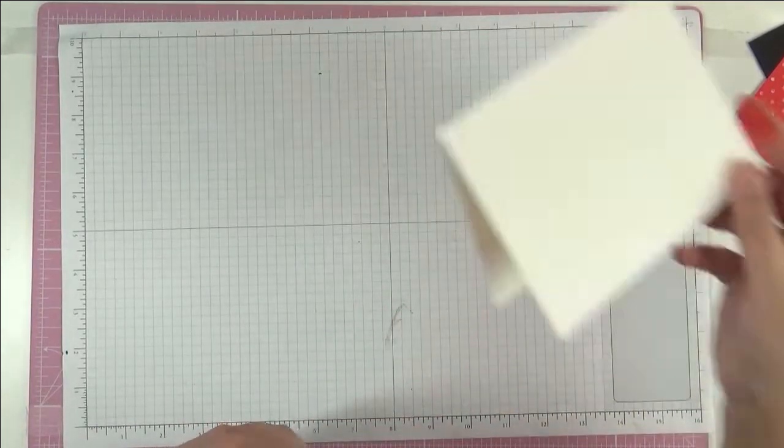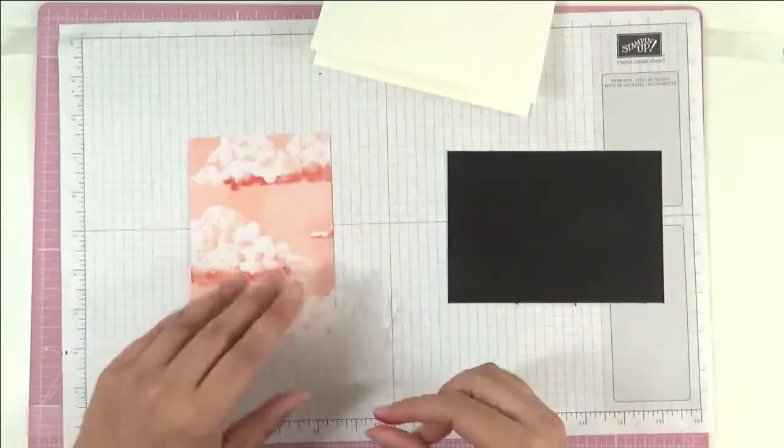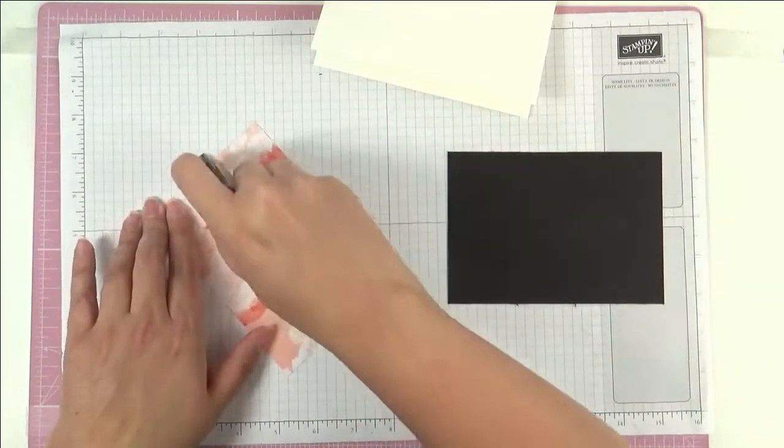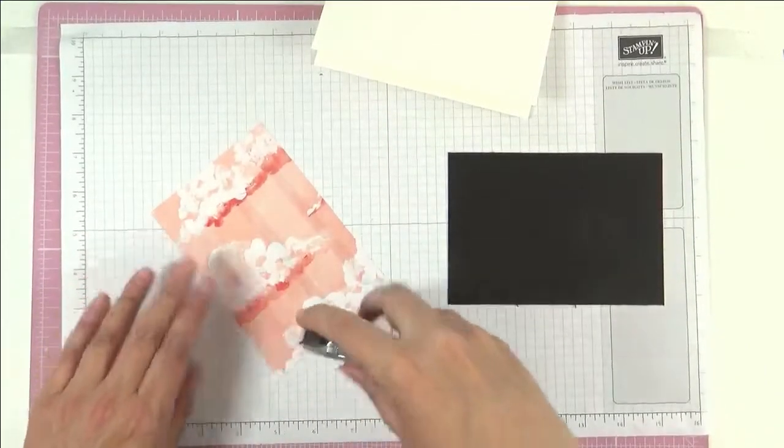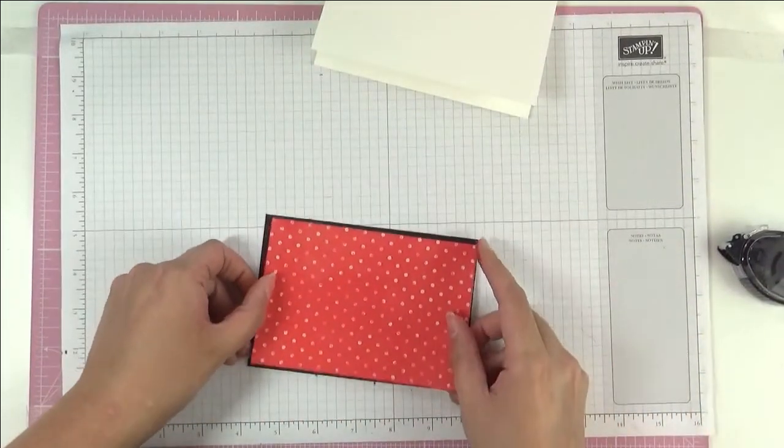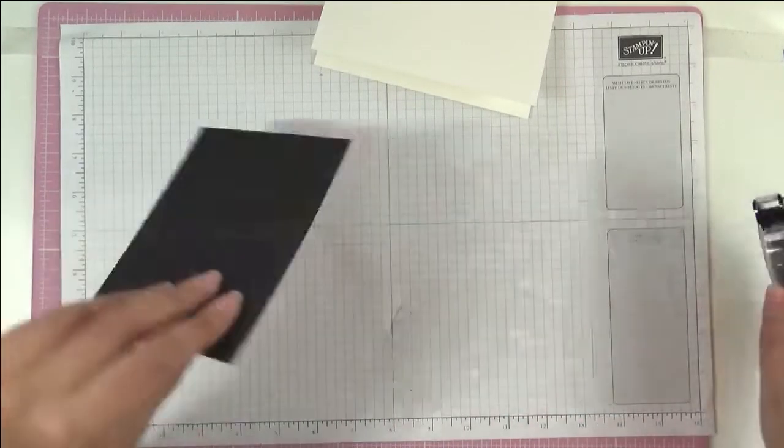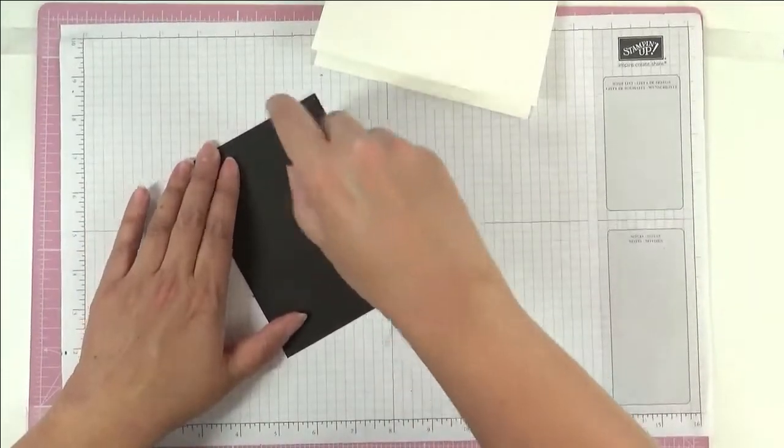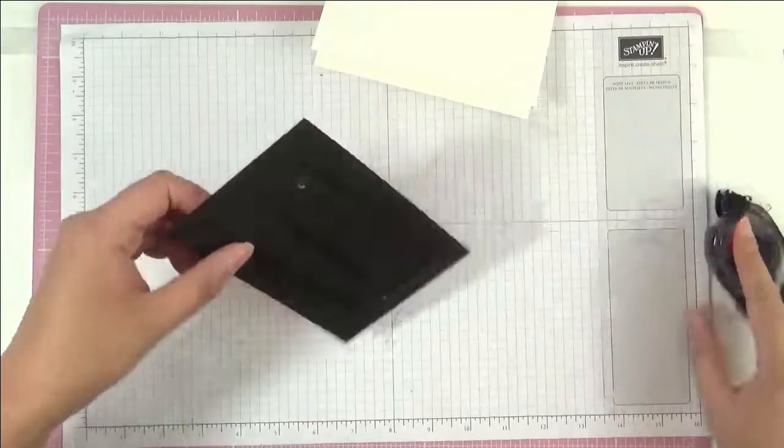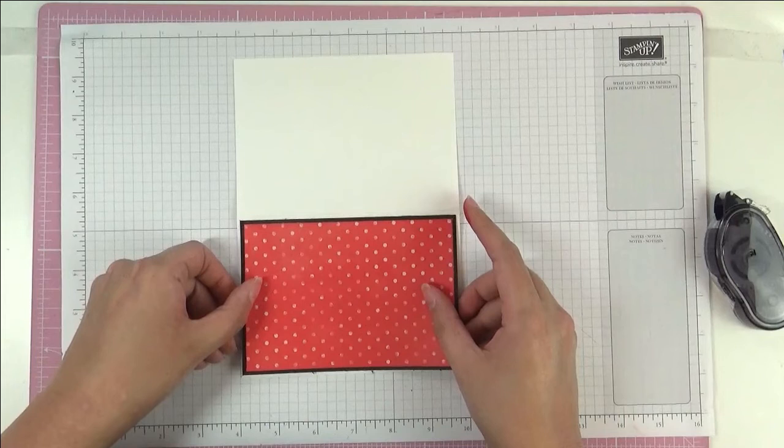Let's start to build our card quickly. We have here a piece of the Flowering Fields Designer Series Paper. All the measurements are on my website, so if you go onto my website, you'll find the link in the description box below and you'll find all the measurements there for this card, all done for you, and you'll also find links to the supply list so you can get this product for yourself.